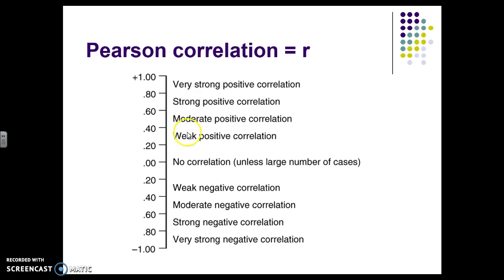So weak, moderate, strong. And then on the other side, we can have a weak negative correlation, a moderate negative correlation, and again, a strong negative correlation.